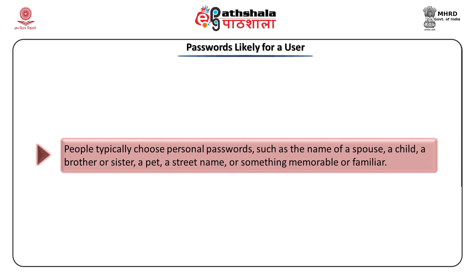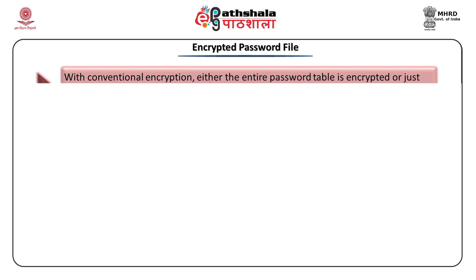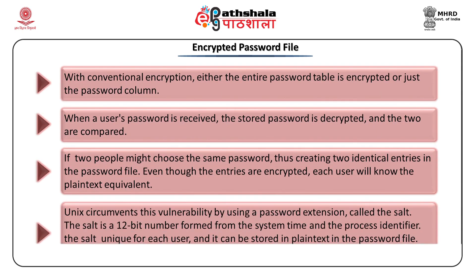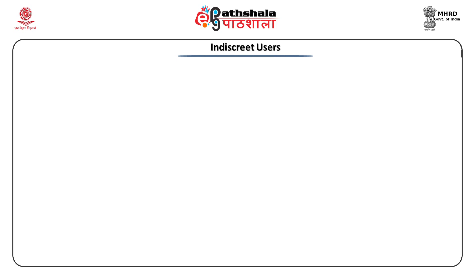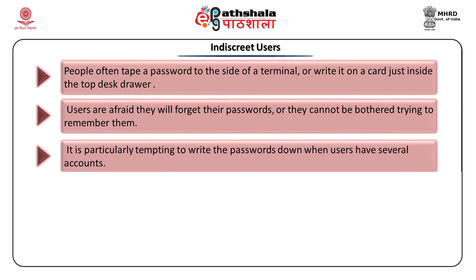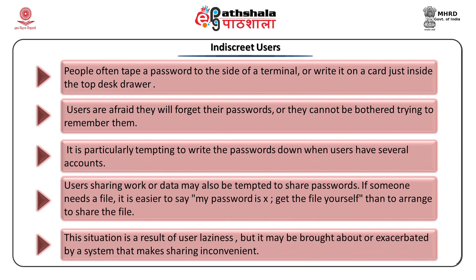A plain text password list is a file organized as a two-column table of user IDs and passwords. In an encrypted password file, such as in Unix, when you enter a password it is encrypted and the encrypted value (with a salt) is stored in the password file, so anyone who looks at the file cannot identify the password. Regarding careless users: users are afraid they will forget their password so they store it somewhere, and users sharing work or data may be tempted to share passwords. If someone needs a file, it is easy to share the password, and because of laziness the user passes the password to another.